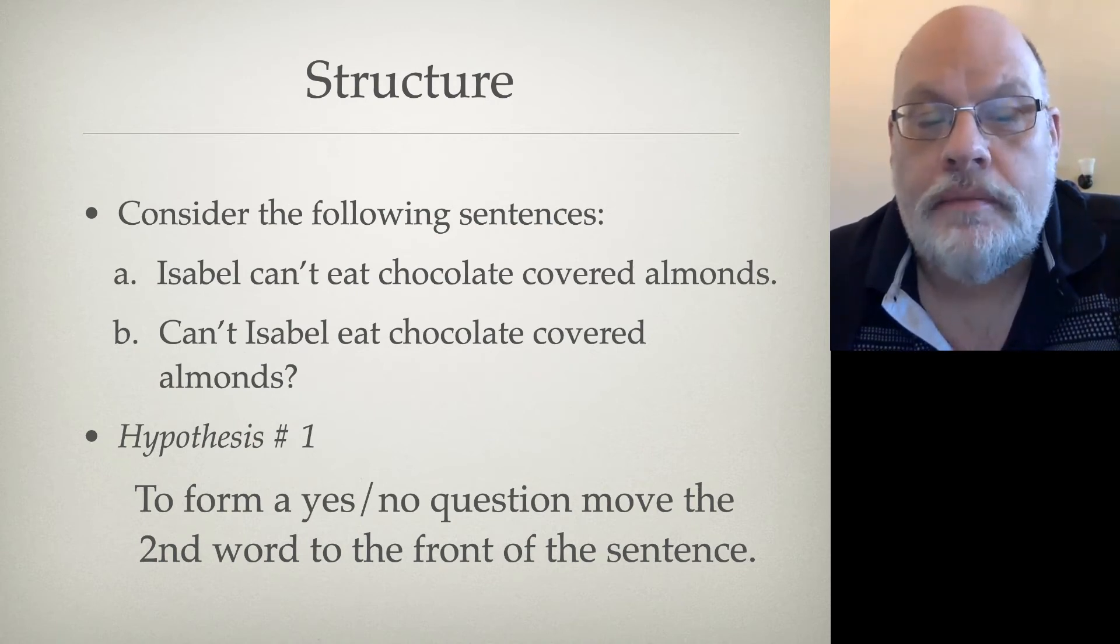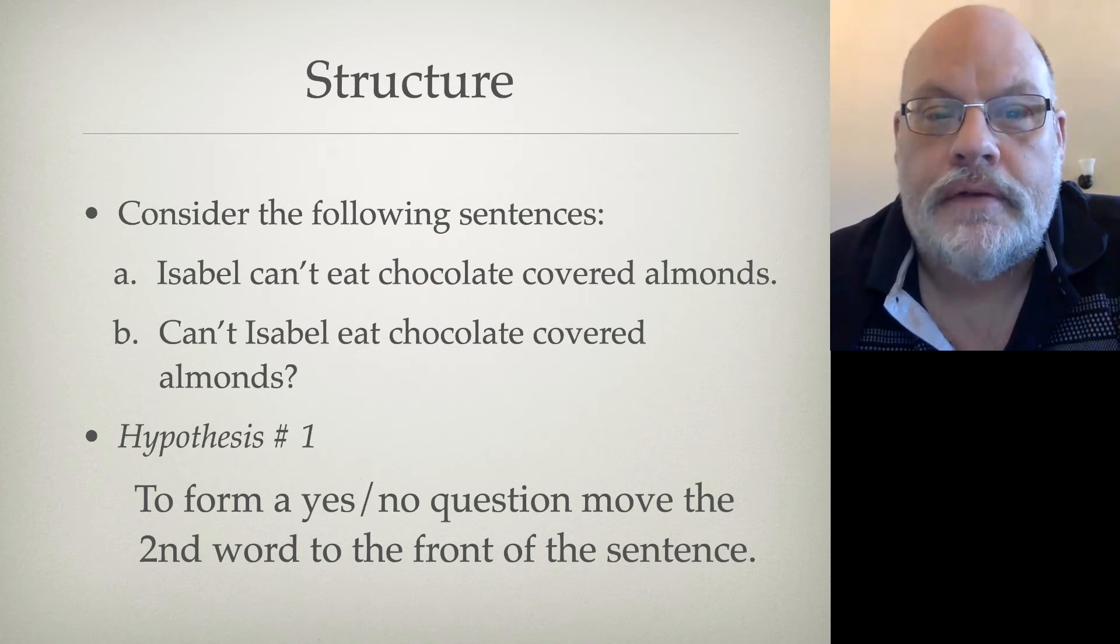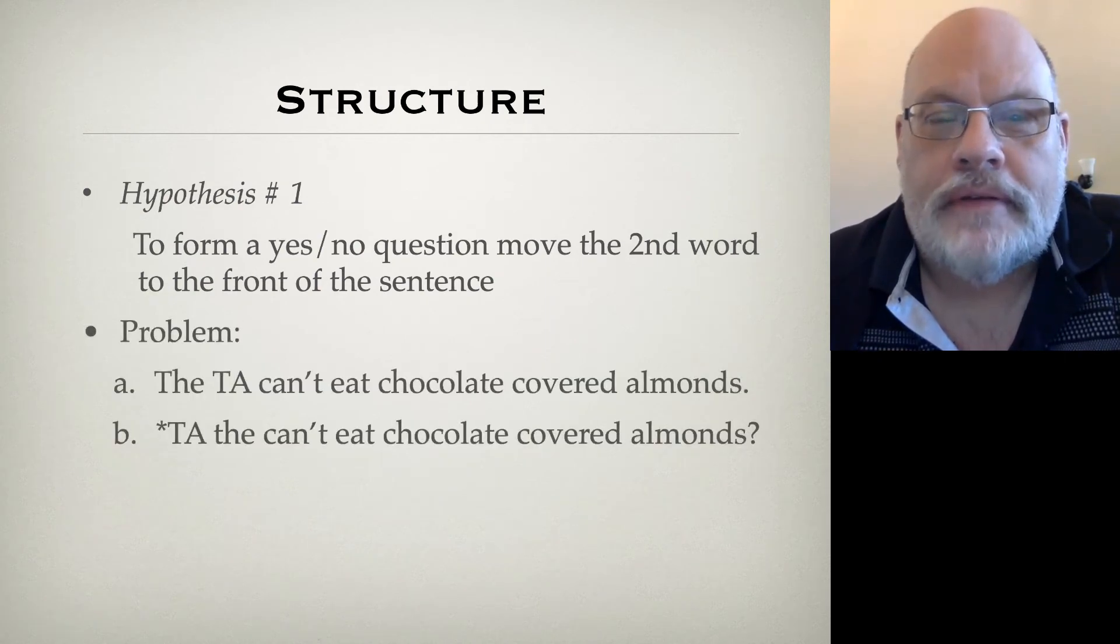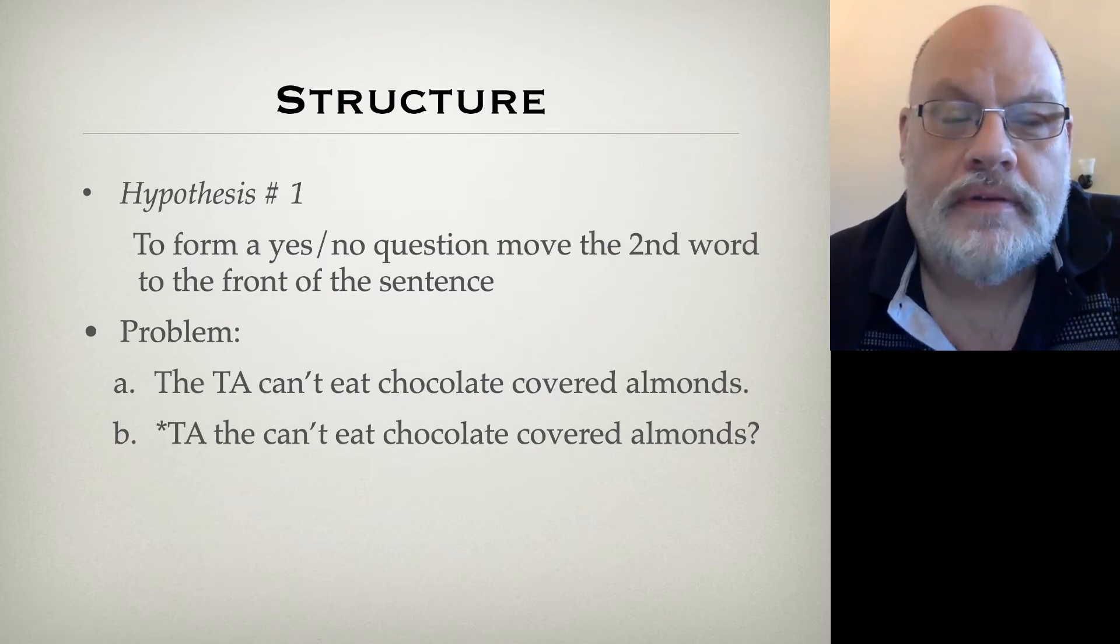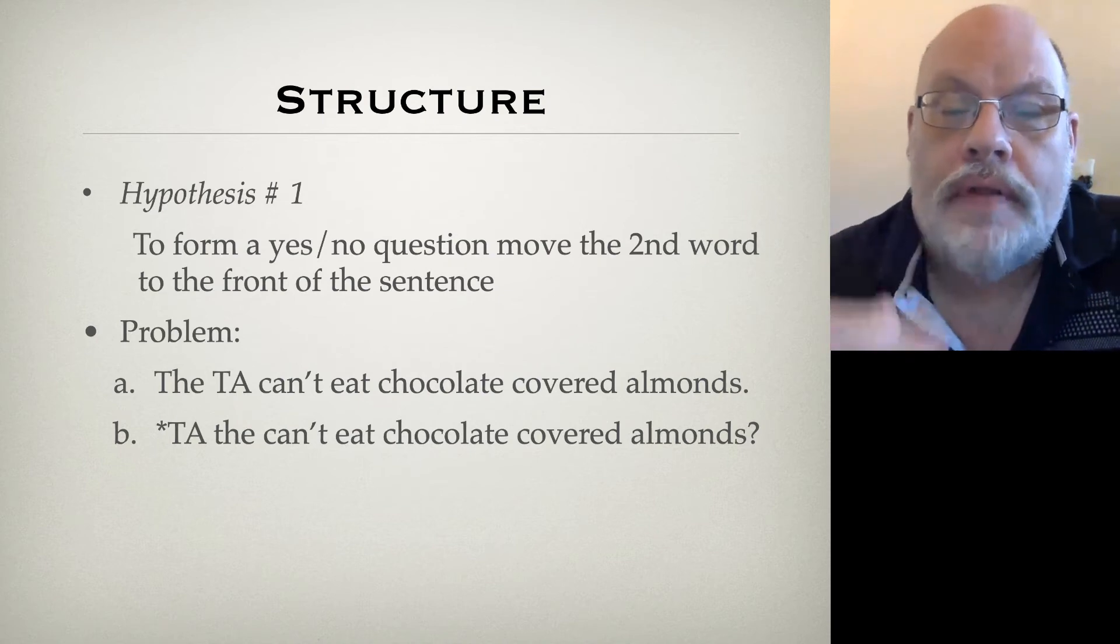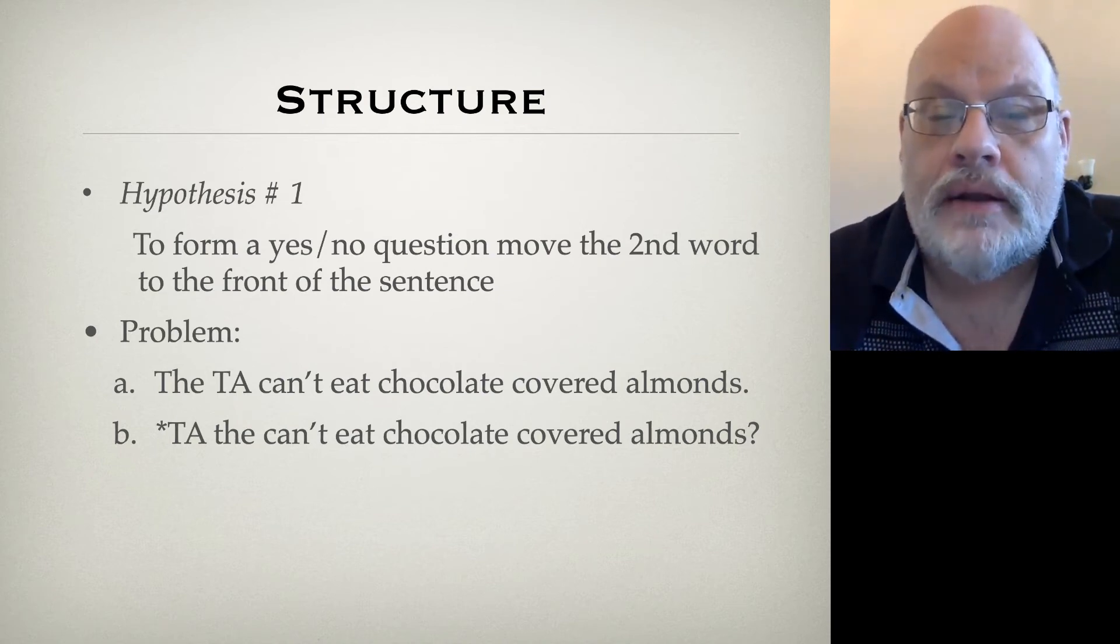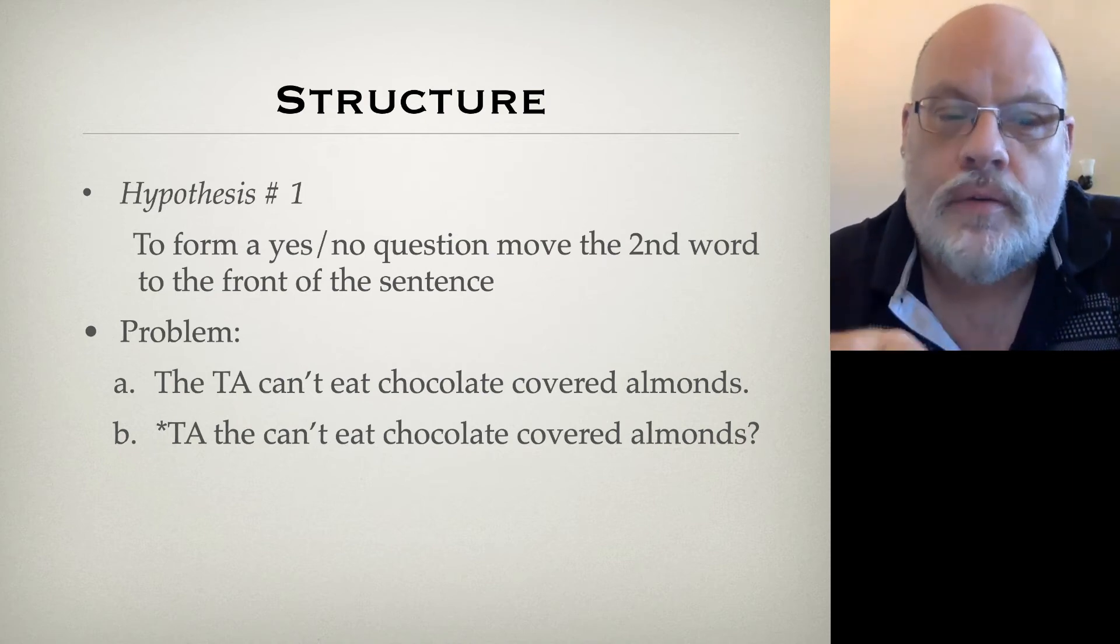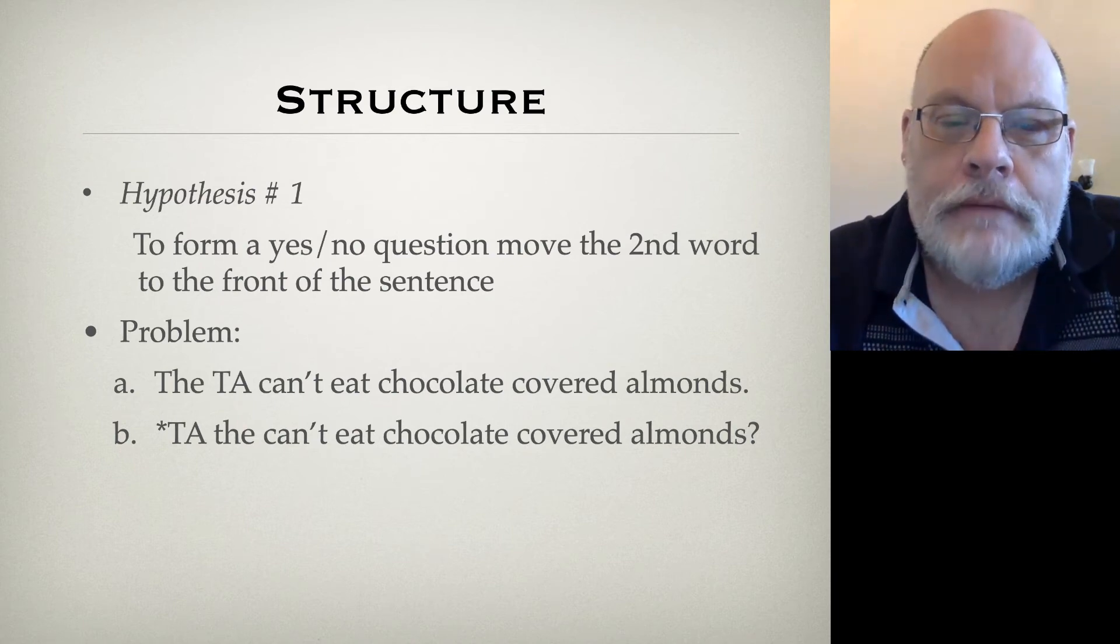On our simplest hypothesis, you just count from the left to the right of the sentence. Now, let's see if that holds up. The problem is that you can have complex subjects. For example, you can say, the TA can't eat chocolate-covered almonds. But you can't say, TA the can't eat chocolate-covered almonds. According to our hypothesis number one, sentence B should be grammatical, and in fact, it should be the yes-no question form, because what you're doing is taking the second word and inverting it with the first. That doesn't seem to be a correct generalization.